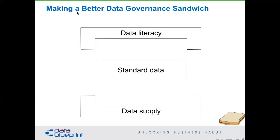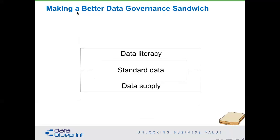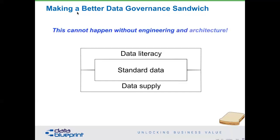We try to eliminate hidden data factories, and this makes all of our operations smoother. We need them all to work together because if we can't, we have no ability. This working together cannot happen without engineering and architecture in focus — it has to occur.